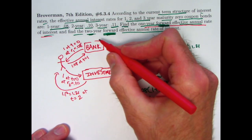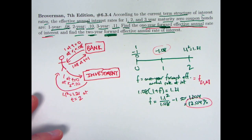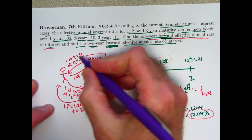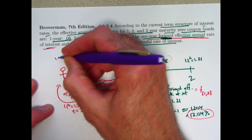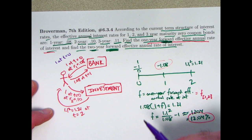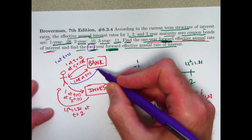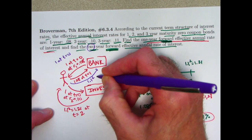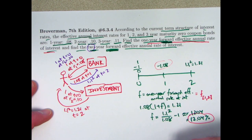That's half the problem. For the two year forward effective annual rate of interest, we're going to use the 11% zero coupon return effective for a three year zero coupon bond. We are still going to borrow one at time zero from the bank. However, we're going to pay it back in two years instead of one year — that's where the two years comes into play. Based on the 10% rate we pay back 1.1 squared, which is 1.21, at t equals two, at R2 equals 0.10.